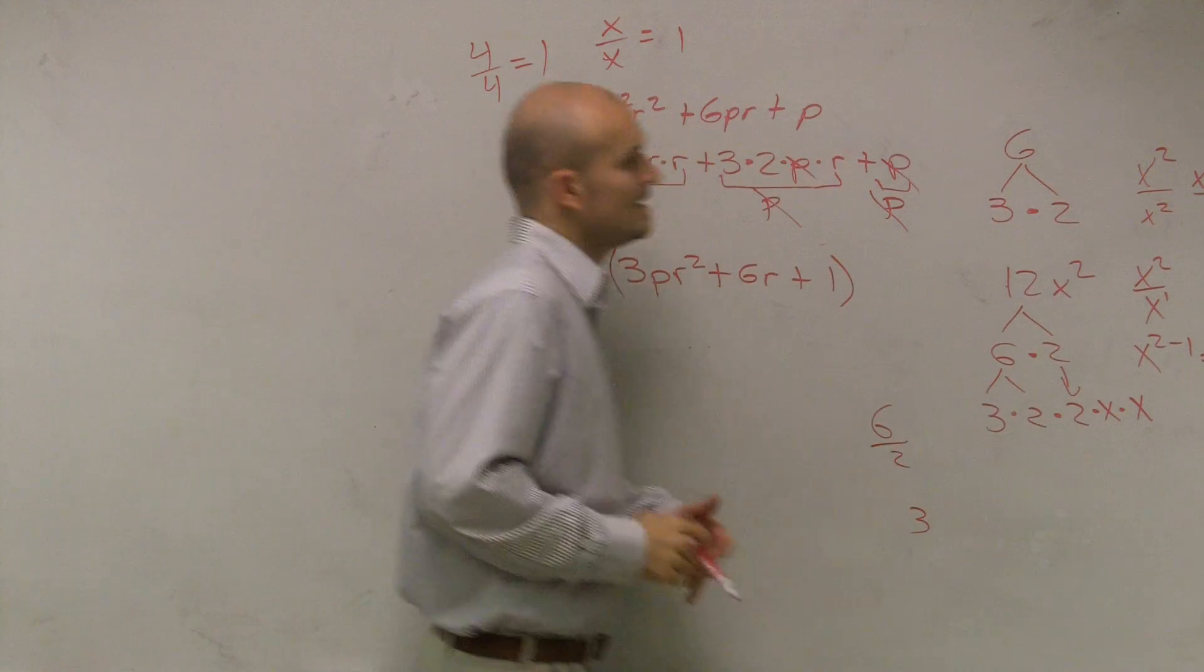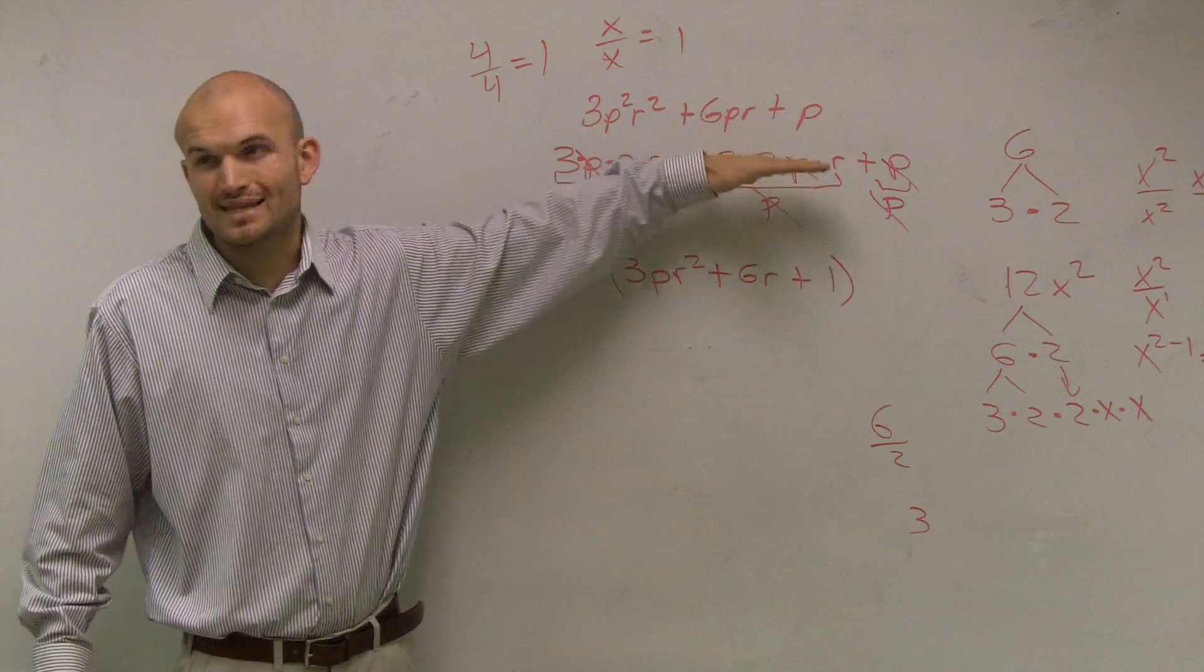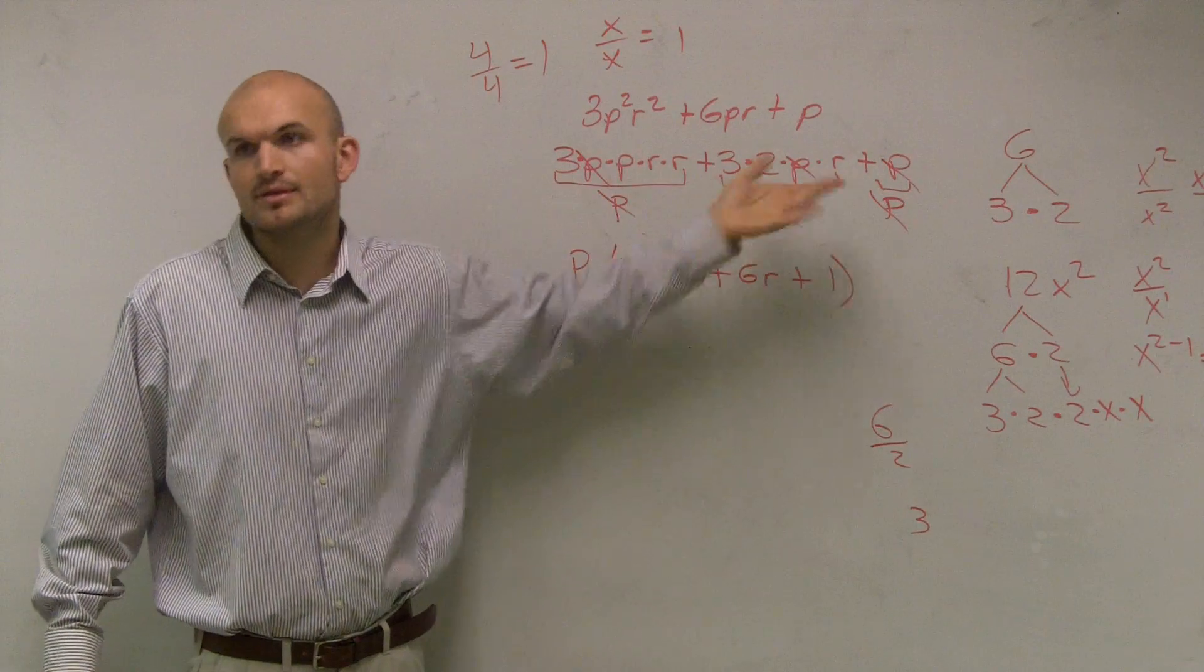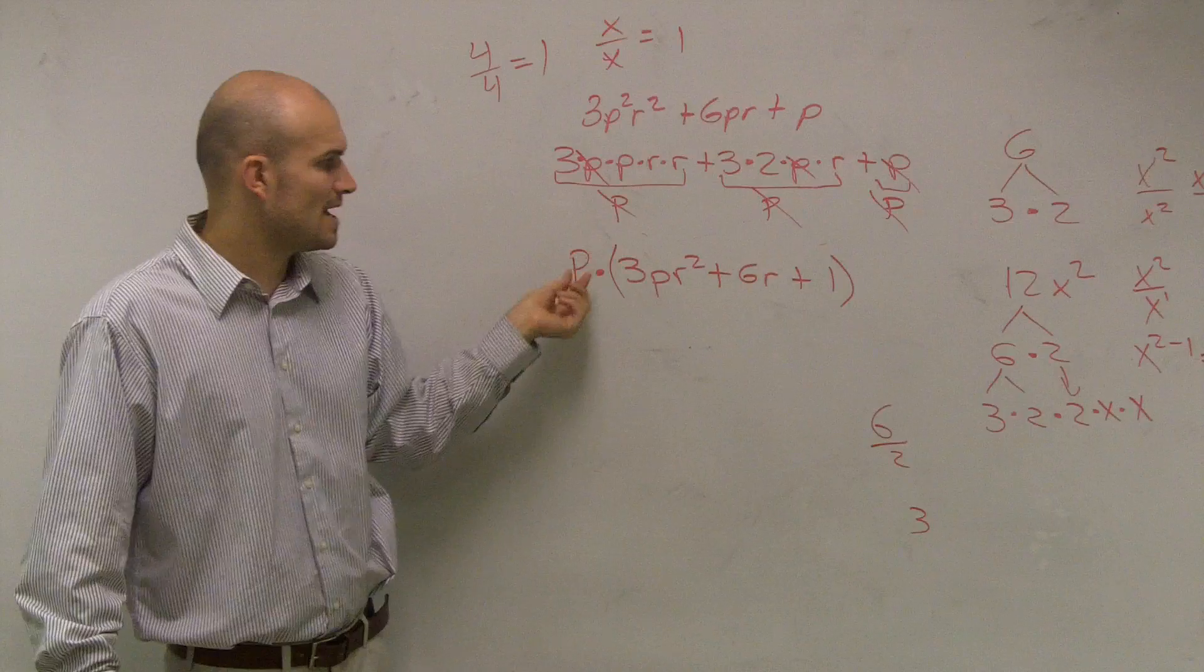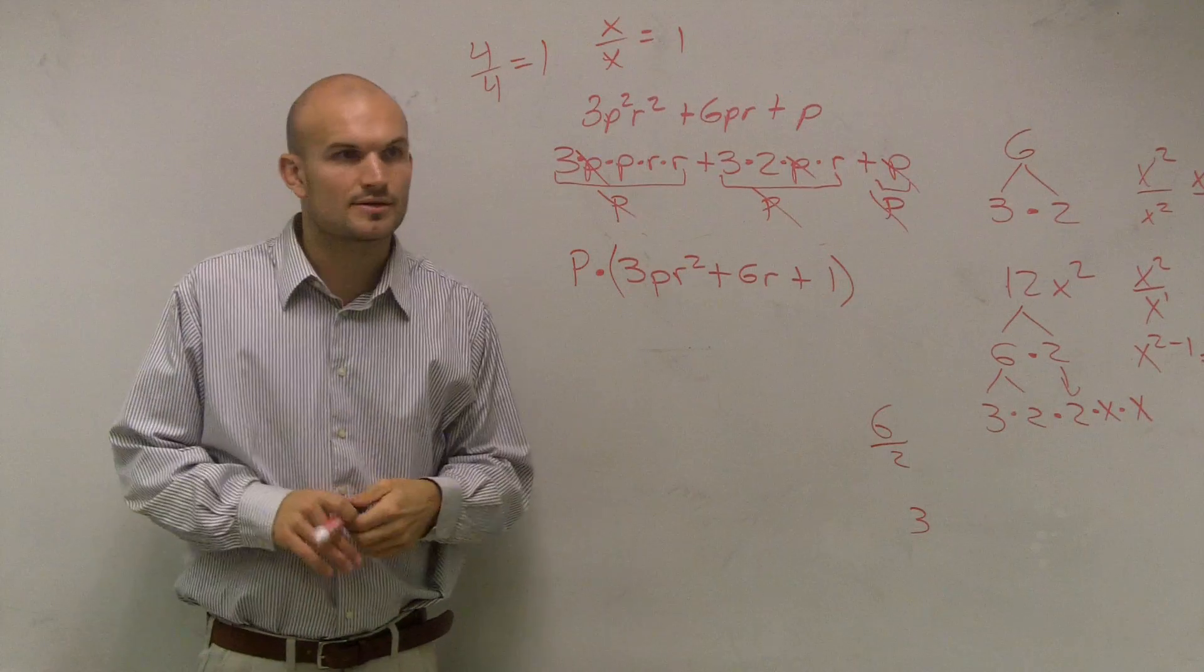So the main thing, just to recap again, is if you're having trouble finding out what they have in common, factor each term out. Then determine what they have in common, divide it out. Whatever you divide by, you're going to write it out as one factor. And then your answer is your other factor.